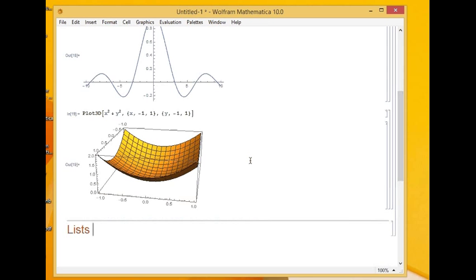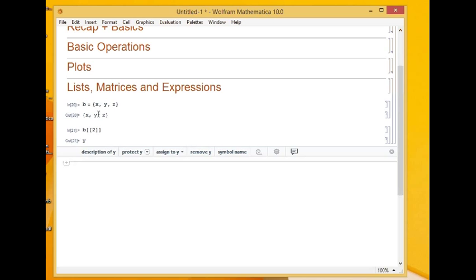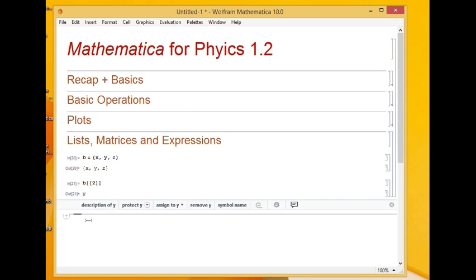Now for the last thing of today's lecture, let's review lists, matrices, and expressions. Let me shrink this one. A list in Mathematica is just like an array. I define it using curly brackets. Say b is equal to x, y, z within curly brackets. So b is my list. If I want to refer to the second element, within square brackets I pass the value to double square brackets. Remember, compared to other languages which begin with 0, Mathematica begins with 1. So b1 refers to x, b2 refers to y, and b3 refers to z.